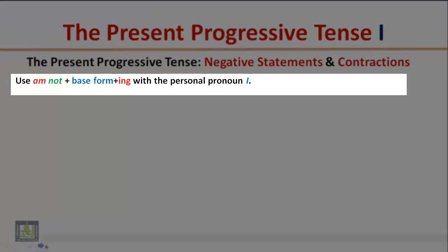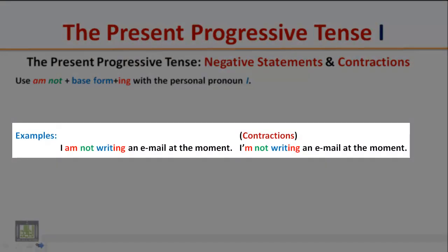Negative statements: Use 'am not' plus the base form plus '-ing' with the personal pronoun 'I'. Example: 'I am not writing an email at the moment.' Note: Do not contract the verb 'am' with 'not' — 'am not' is not contracted.